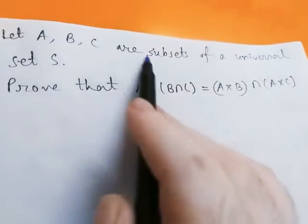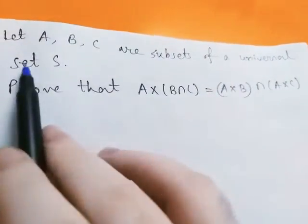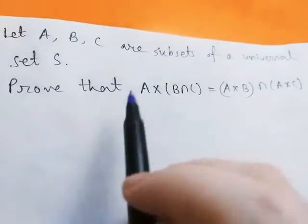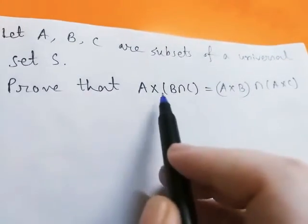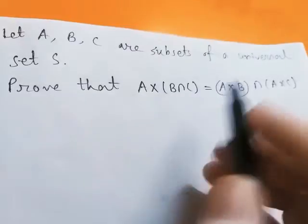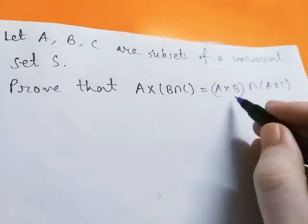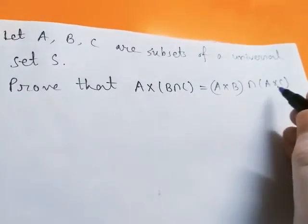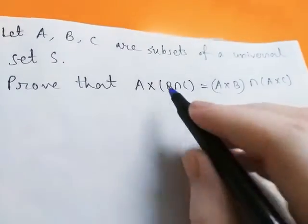Let A, B, C be subsets of universal set S. Prove that A cross (B intersection C) equals (A cross B) intersection (A cross C).